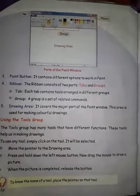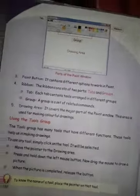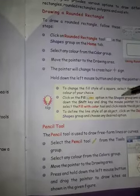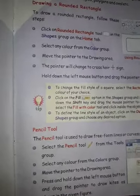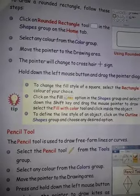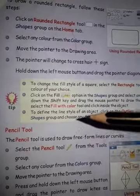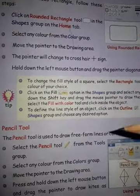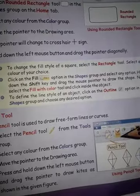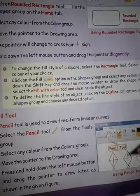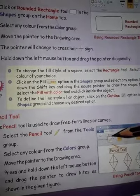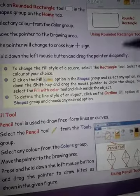Some other topics of the chapter include using tools and groups. We have different tools in the Paint program like the Pencil Tool, Line Tool, and Curves Tool. The Pencil Tool is used to draw free-form lines or curves. If you want to draw a straight line, use the Line Tool; for free-form shapes or pictures, use the Pencil Tool.